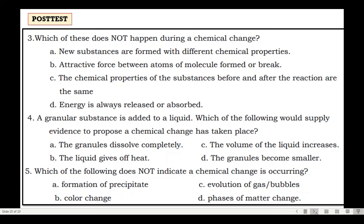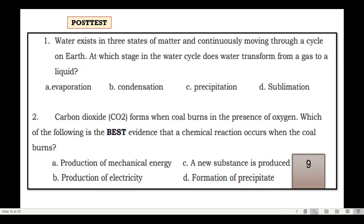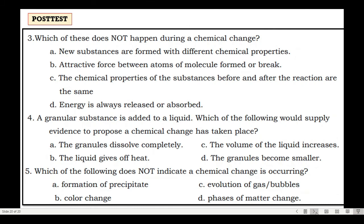Number 5: Which of the following does not indicate a chemical change is occurring? A. Formation of precipitate. B. Color change. C. Evolution of gas or bubbles. Or D. Phases of matter change. Let's check: Number 1 is B. Condensation. Number 2 is C. A new substance is produced. Number 3 is C. The chemical properties of substances before and after the reaction are the same. Number 4 is B. The liquid gives off heat. Number 5 is D. Phases of matter change.